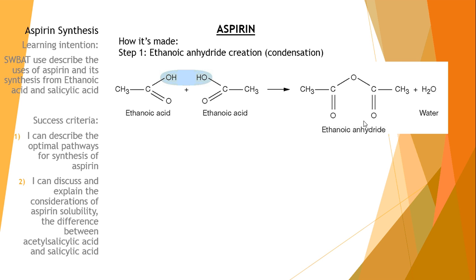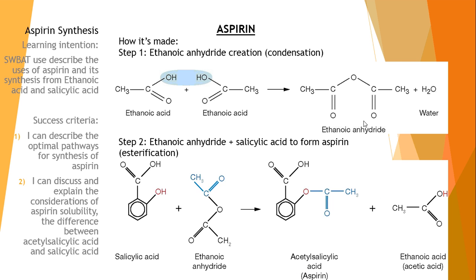And ethanoic anhydride is what we react with salicylic acid to make aspirin. And the reasons for that, you can find in your book. So once you've made ethanoic anhydride, then we react it with salicylic acid. And you can see that it's that esterification reaction. It's almost an esterification reaction. You have the OH group and the CH3CO group there. And as they bond together, ethanoic acid is produced. And acetylsalicylic acid, or aspirin, is created as well.